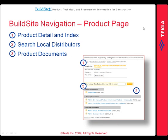On each product page, product details and indexes are provided for reference. In addition, the ability to search for local distributors of a particular product by U.S. zip code is also provided. Most importantly, all of the necessary product information like product data and MSDS documents are provided.